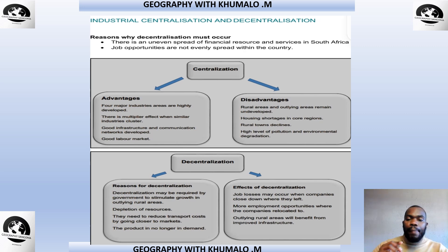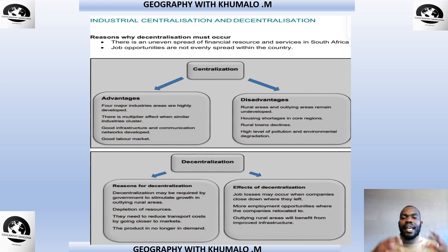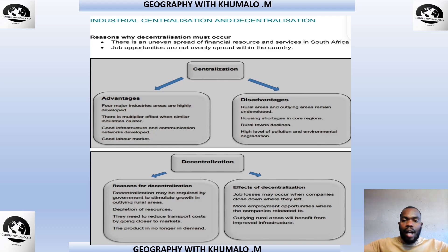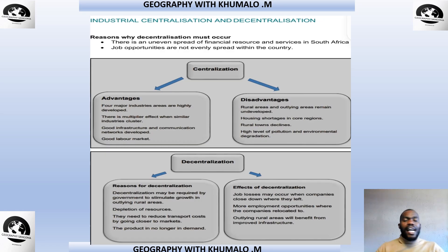Rural-urban migration means people leave rural areas for urban areas, so rural town populations decline. There is also a high level of pollution and environmental degradation where there are more people — the environment is polluted and deterioration becomes uncontrollable. Regarding decentralization, the government may require it to stimulate growth in outlying areas. Other reasons include depletion of resources, the need to reduce transport costs between markets and industries, or when a product is no longer in demand in a particular area.